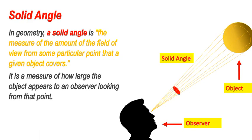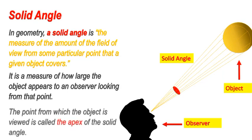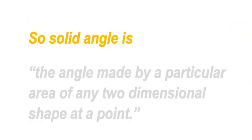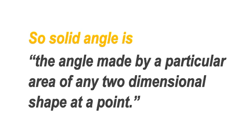It is a measure of how large the object appears to an observer looking from that point. The point from which the object is viewed is called the apex of the solid angle. So solid angle is the angle made by a particular area of any two-dimensional shape at a point.